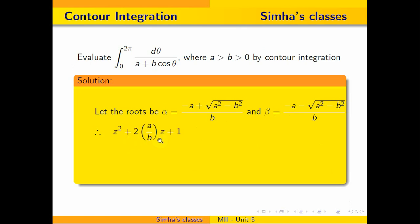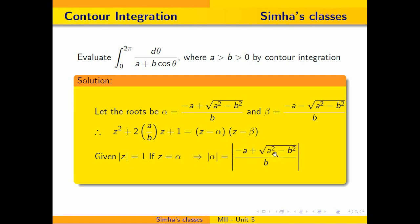The quadratic equation factors as (z − α)(z − β). Now I check which root lies inside the circle |z| = 1. I compute |α| and check whether it is less than 1 or greater than 1. Since a is greater than b and both are greater than 0, substituting values confirms that |α| is less than 1, so z = α lies inside the circle. This is a simple pole.